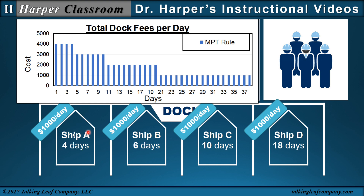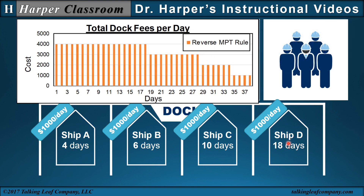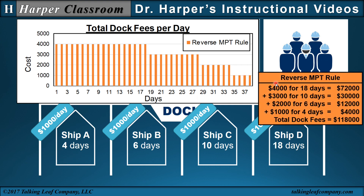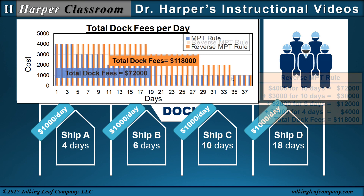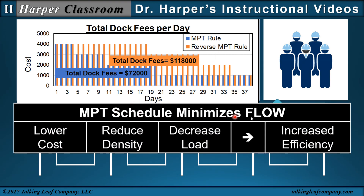Calculating the total cost, we have $72,000 for the MPT rule. To compare this with a reverse MPT rule — scheduling ship D, then C, then B, then A — we have $4,000 a day for the maximum number of days and $1,000 a day for the minimum number of days. The total dock fees become $118,000. So we can potentially significantly decrease dock fees with the MPT rule. In this example, the dock fees illustrate the flow, and the MPT schedule minimizes flow. Whether lowering cost, reducing density on the system, or decreasing the load, the MPT schedule will increase efficiency by minimizing the flow. Flow is also an important diagnostic because it is part of other diagnostics.